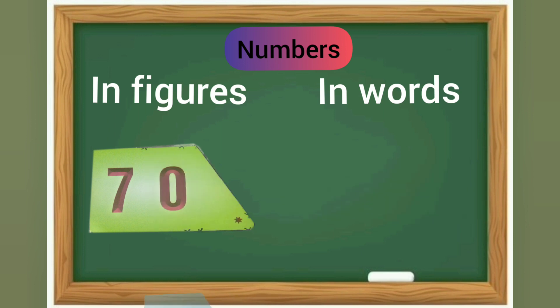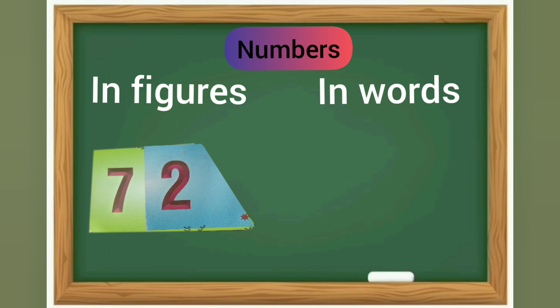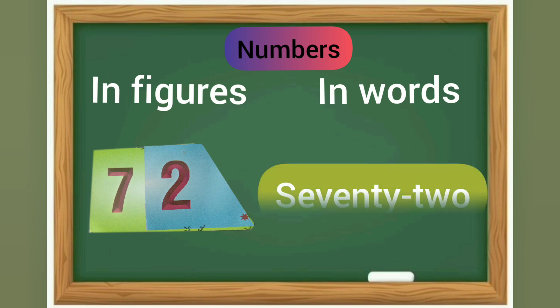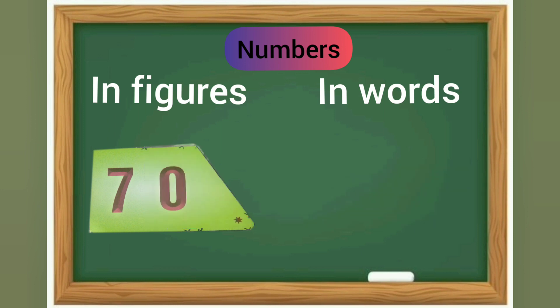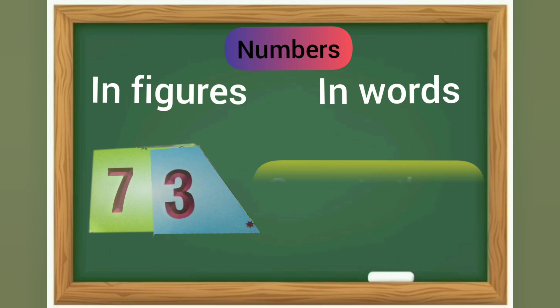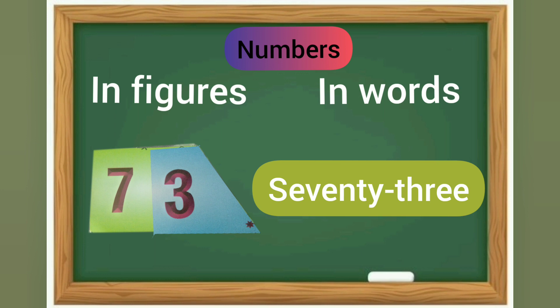70 and 2 is 72. In words: S-E-V-E-N-T-Y T-W-O, seventy-two. 70 and 3 is 73. In words it is S-E-V-E-N-T-Y T-H-R-E-E, seventy-three.